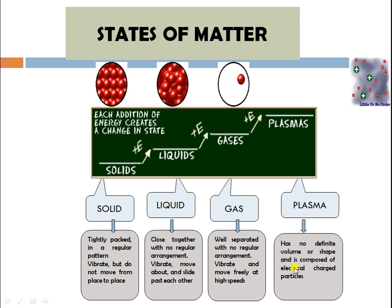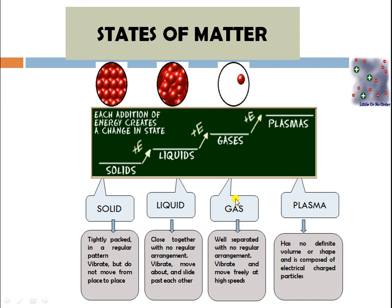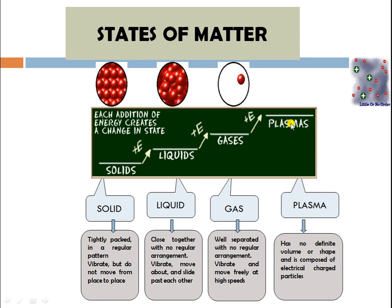The fourth state, plasma, has no definite volume or shape and is composed of electrically charged particles. When you heat gas molecules — when you add heat or energy to the gaseous state — it converts into an ionized form, and that is known as plasma. Plasma consists of partially positive and negative charges.